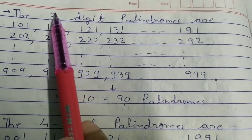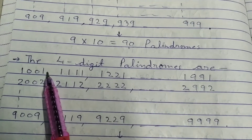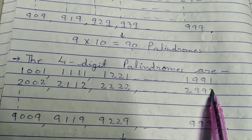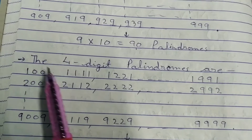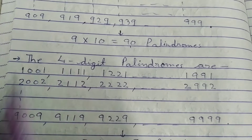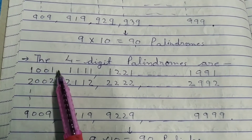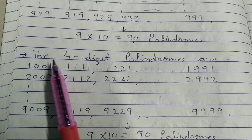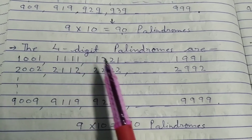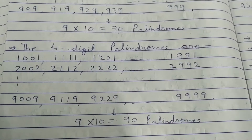For four-digit numbers, the first and last digit must be the same, and the two center digits must also be the same for it to be a palindrome. Again, the first digit cannot be zero, so the last digit also cannot be zero. In total, we have 9 × 10 = 90 options, giving 90 four-digit palindromes.